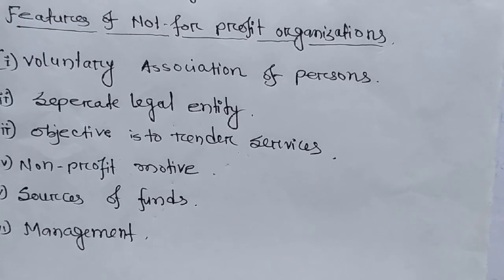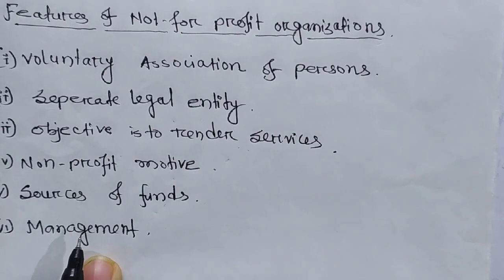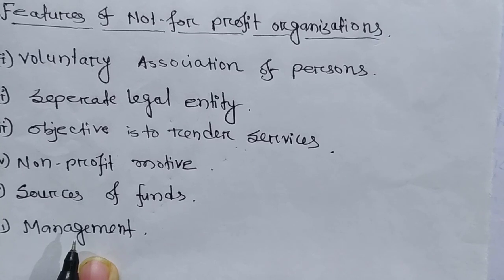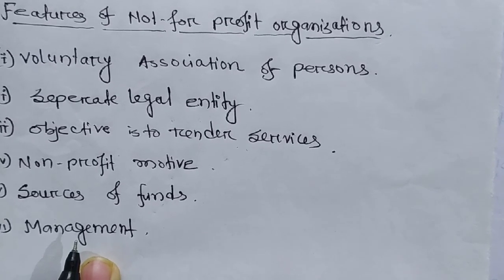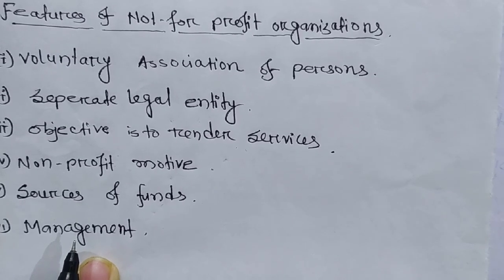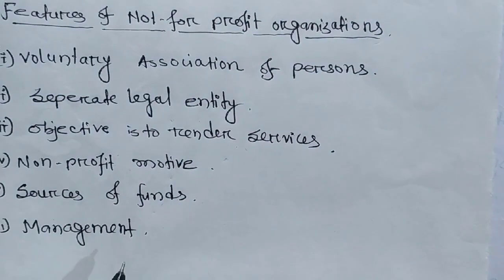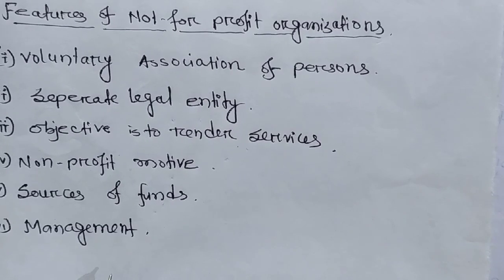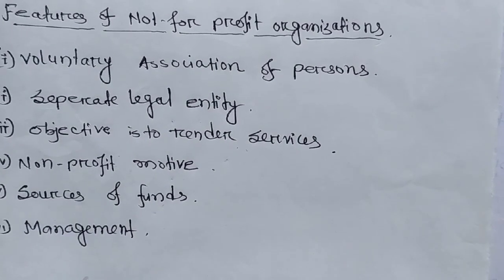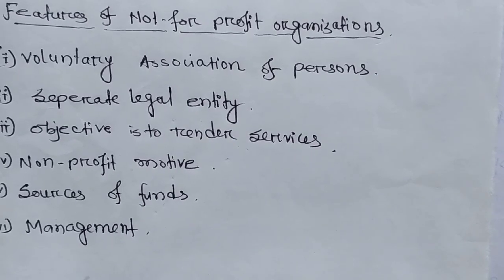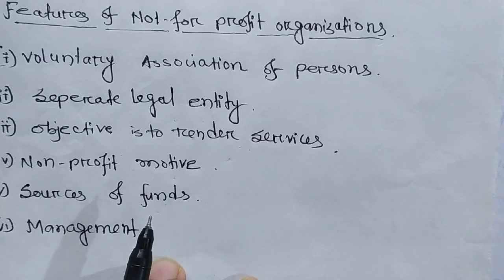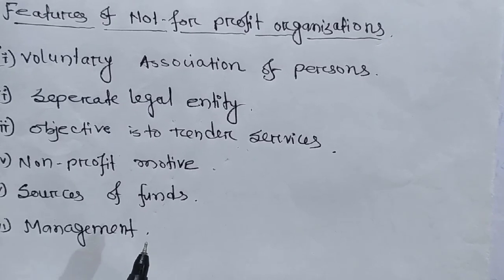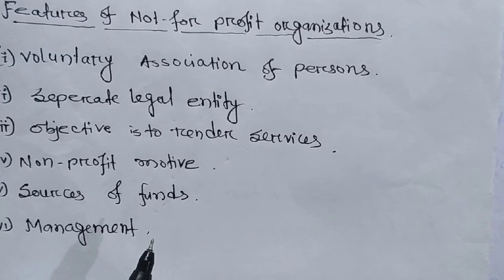The last feature is management. In a profit-seeking organization, management is handled by shareholders, who are generally the owners of the business. But in a Not-for-Profit Seeking Organization there is no owner, so the organization is managed by elected persons or members of the organization.